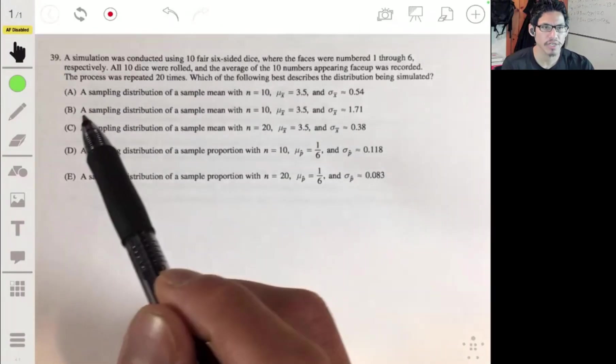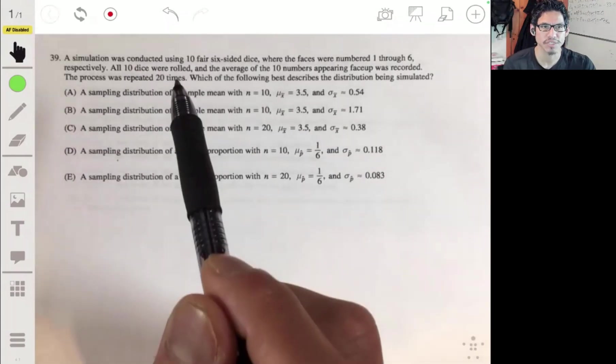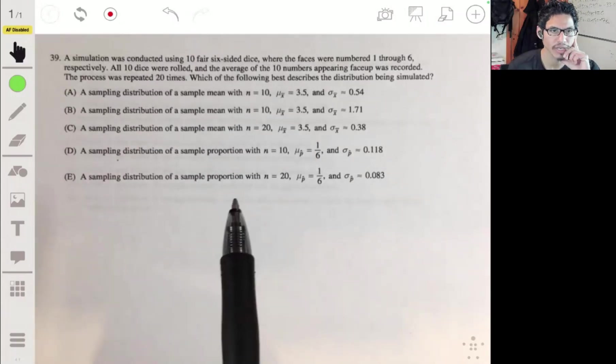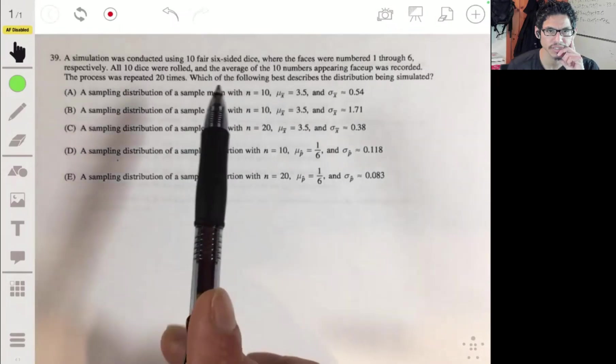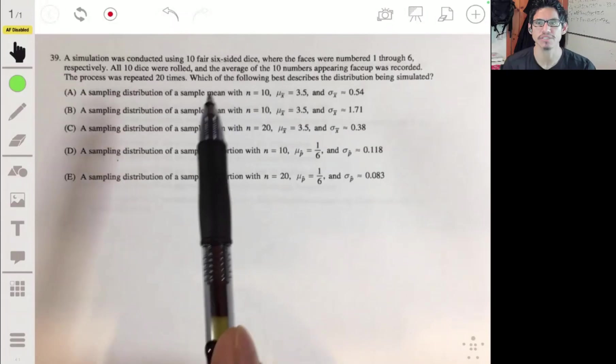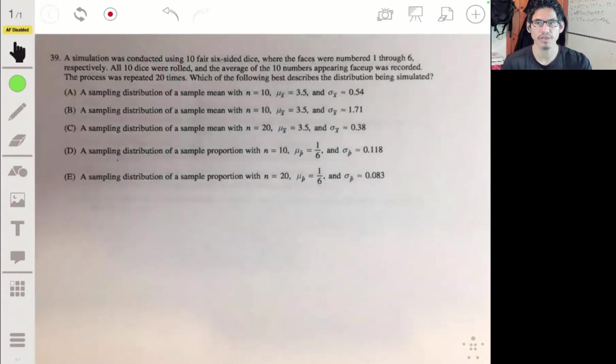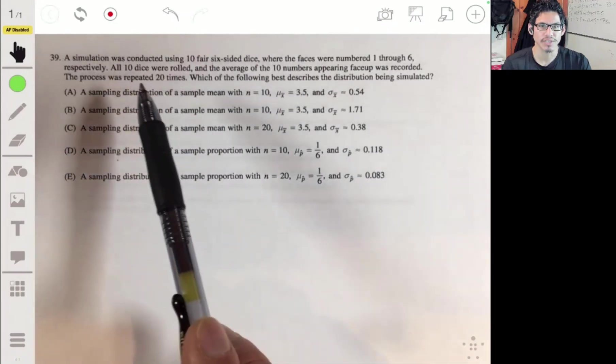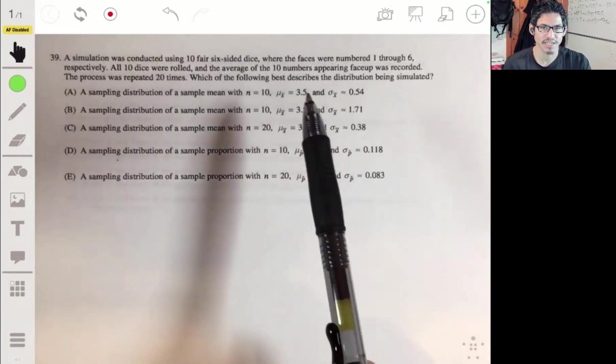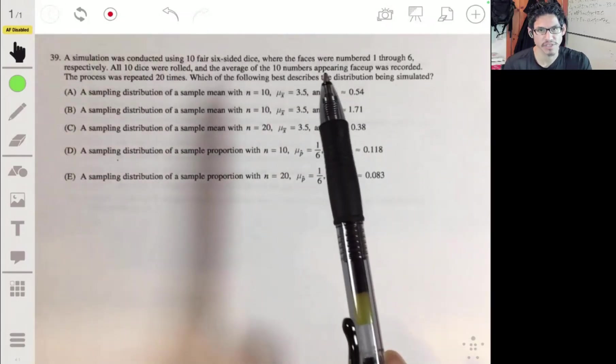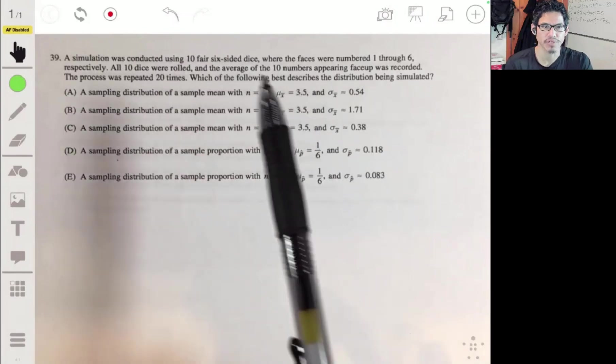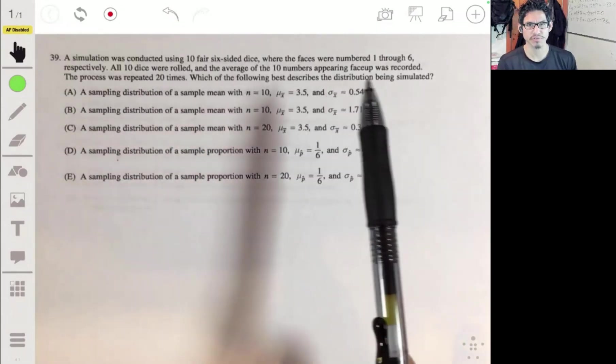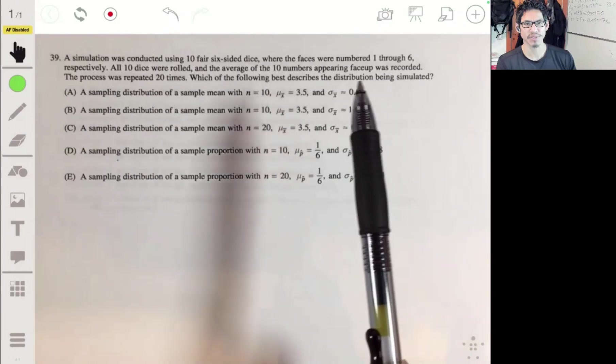Alright, I'm going to go over problem 39 of the multiple choice section of the 2016 practice exam. Here we have a simulation that was conducted using 10 fair six-sided dice, so just regular dice. All 10 dice were rolled, and the average of the 10 numbers appearing face-up was recorded, and they did this 20 times. Which of these best describes the distribution being simulated?